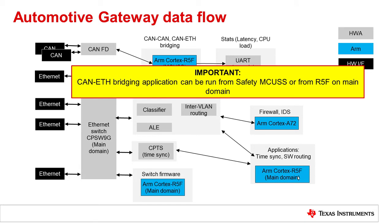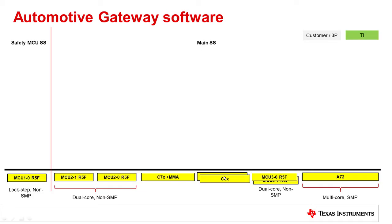The CAN-Ethernet bridging application can be run from the MCU domain R5F instance or from the main domain. In the current SDK implementation, the application is hosted on the MCU domain R5F instance. Let us now see how the various functional blocks map to the components from the SDK. Jacinto 7 platform is built on a heterogeneous architecture that includes a mix of real-time CPU cores, generic compute cores, and the integrated safety MCU island for safety applications. Software running on multiple cores collaborates to realize the overall system function.